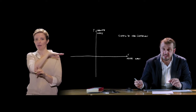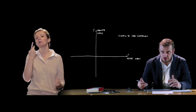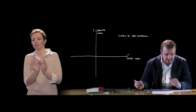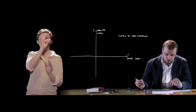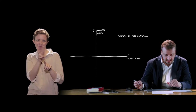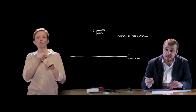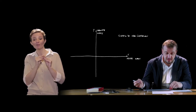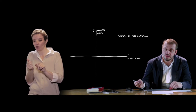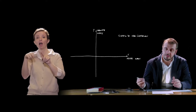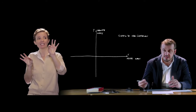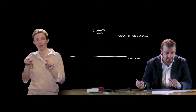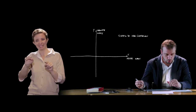Fissate le unità di misura sui due assi, in genere la stessa, è possibile rappresentare un punto mediante una coppia ordinata di numeri reali. Tali numeri vengono detti coordinate del punto. La prima coordinata si chiamerà ascissa, la seconda coordinata viene detta ordinata.